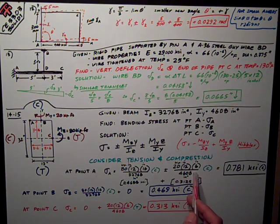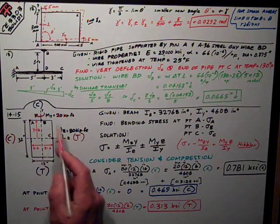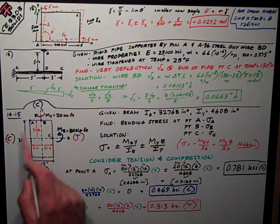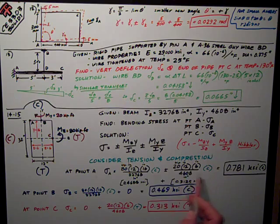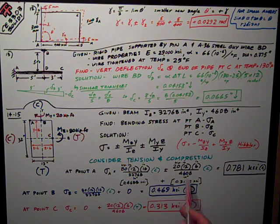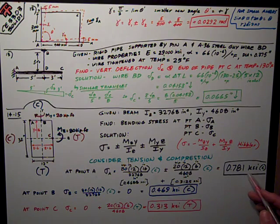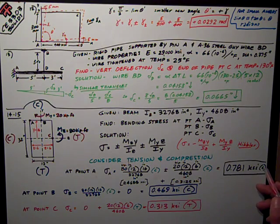The moment about the y-axis is 20 kip-feet times 12 inches per foot times the z distance of 6 inches to point A from the vertical neutral axis, divided by I_y = 4608. That's also compression. So I calculate those numbers out. The M_z component is 0.4688 ksi, the M_y component is 0.3125. They're both compression, so I just add them up and get 0.781 ksi compression.